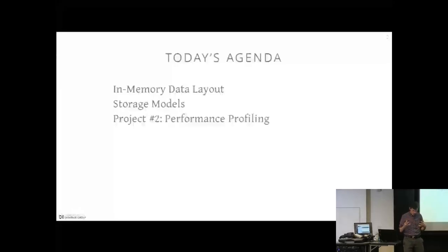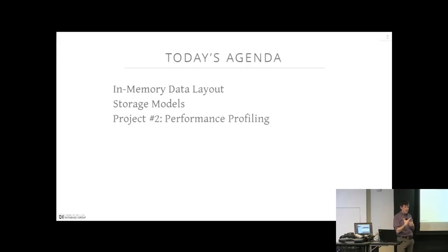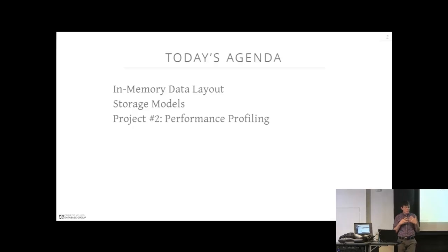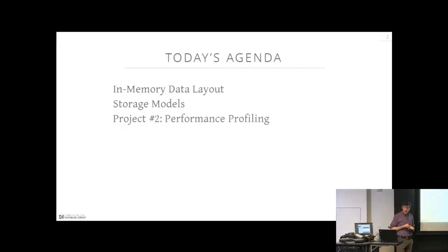Today we're going to discuss the storage layer — how do you actually represent a database in memory. We'll start at the lowest level first, talking about how you organize the individual bits or bytes of attributes for each tuple. Then we'll go into the different storage models: the different ways to represent tables in their entirety, including what it means for something to be in a row store or a column store, and the performance implications of each.